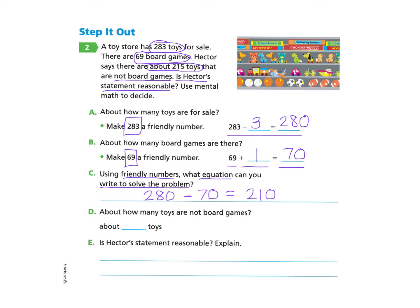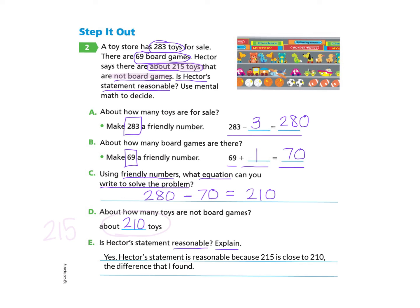Now let's look at Part D and Part E. About how many toys are not board games? We said it was about 210. Is Hector's statement reasonable? Hector said there were about 215 toys that were not board games, which is pretty close to 210. So we can answer yes, Hector's statement is reasonable because 215 is close to 210, which is the difference that I found.